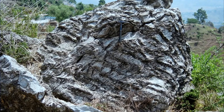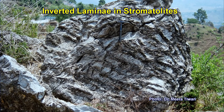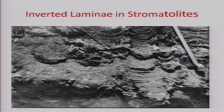Stromatolites are also used for top and bottom criteria when doing stratigraphic work — to know whether the bed is in a normal state of deposition or has been tectonically deformed or inverted. In recumbently folded rocks, one bed can show inversion. In such outcrops, the stromatolites are inverted — normally convexity is up, but if you find convexity downward, that outcrop has been inverted by faulting or recumbent folding. These inverted laminae are good indicators of top and bottom.